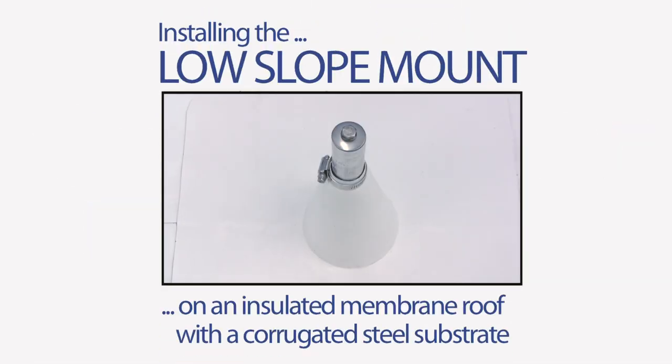This video briefly demonstrates the key steps to installing Quick Mount PV's new low-slope mount onto an insulated membrane roof on a corrugated steel substrate.